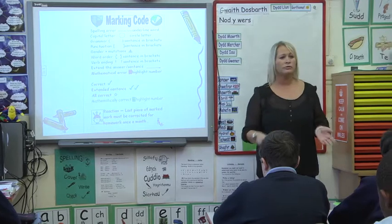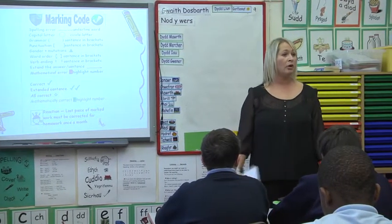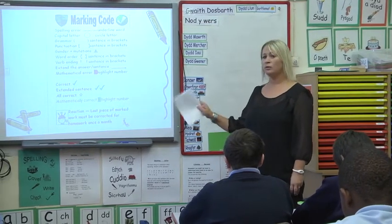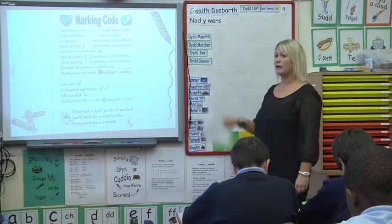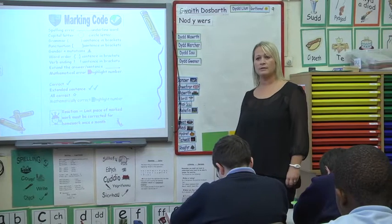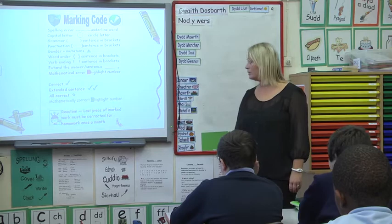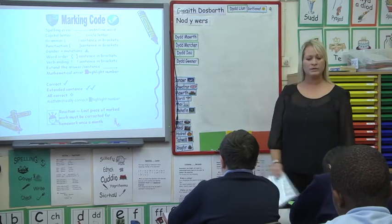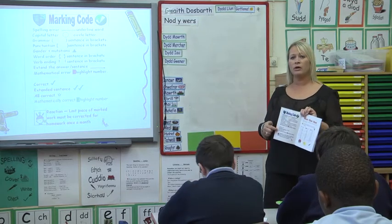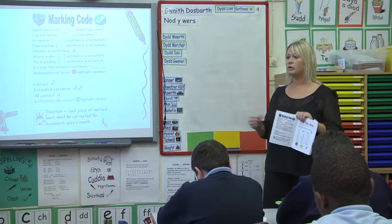Usually when we mark your books, you don't even look back. You don't think, 'Well, I've spelled that wrong.' To be honest, you carry on and keep spelling it wrong. Okay, so now we're not going to change it for you. We tell you where the errors are. You've got to look at it — where am I going wrong here? — and go back through your booklet. The expectation is the last piece of marked work must be corrected for homework once a month. You look at the code, and it gives you a hint. You've got to work out where you're going wrong.